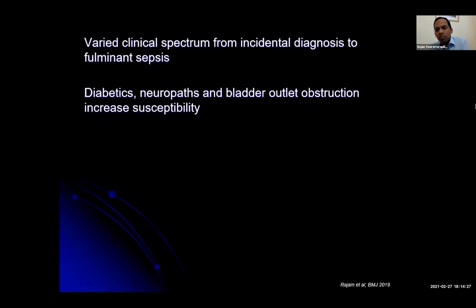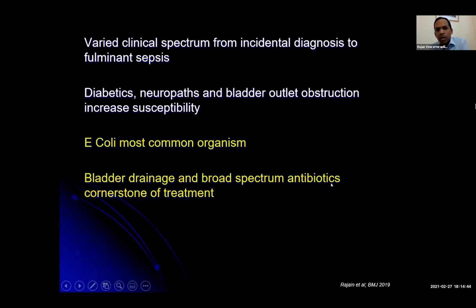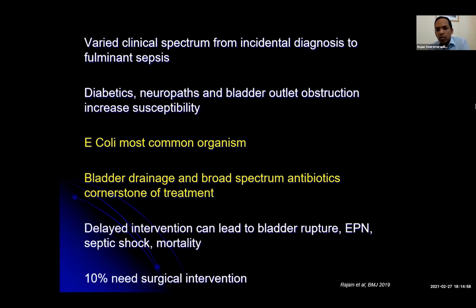Moving on to emphysematous cystitis. This has a wide clinical spectrum from incidental diagnosis to fulminant sepsis. It's often seen in diabetics, neuropaths, and patients with bladder outlet obstruction. On the scan you can see a rim of air around the bladder wall and air within the bladder. E. coli is the most common organism. The cornerstone of treatment is bladder drainage with a catheter and broad spectrum antibiotics. Maintain a high index of suspicion — delayed intervention can lead to bladder rupture, ascending infection causing emphysematous pyelonephritis, shock, and death. Overall mortality is about 6–9% because many cases are subclinical. About 10% need surgical intervention, including occasional partial cystectomy for debridement of devitalised bladder wall.